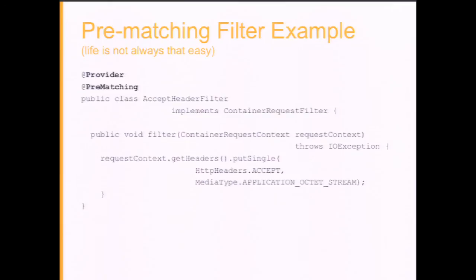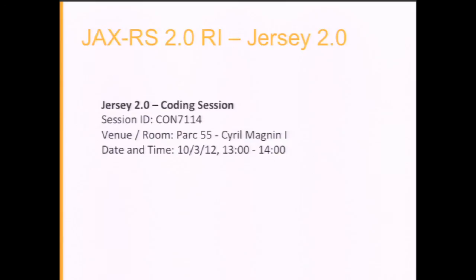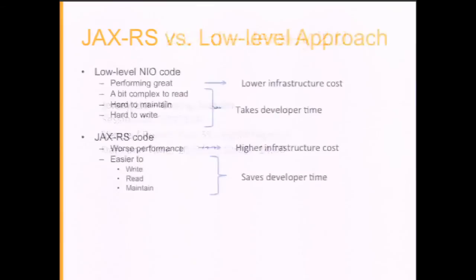Should you need more information on JAX-RS 2.0 or Jersey 2 — the reference implementation — there is another talk tomorrow with Marek Potoczar, the co-spec lead. That talk will be more about coding with live coding demonstrations. To compare: low-level NIO code performs great but is really hard to write, takes time, and is hard to maintain. As opposed to JAX-RS-based code where the performance is worse — not that bad, but definitely worse — and the code is much easier to write, read, and maintain.